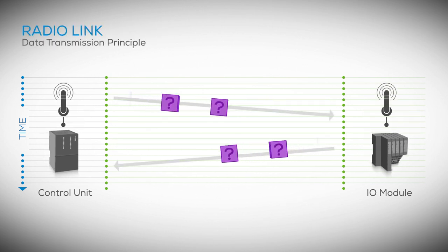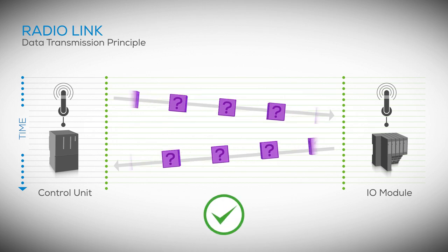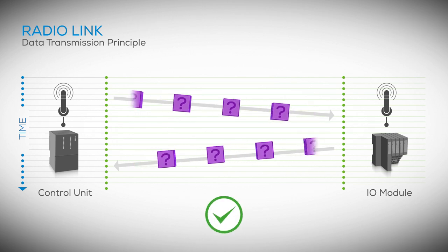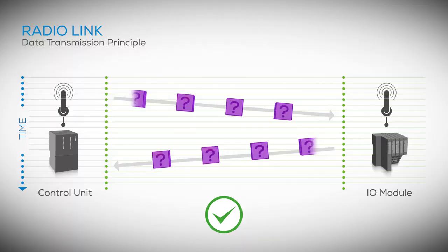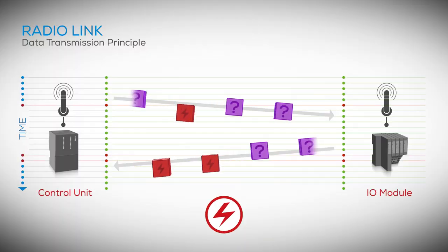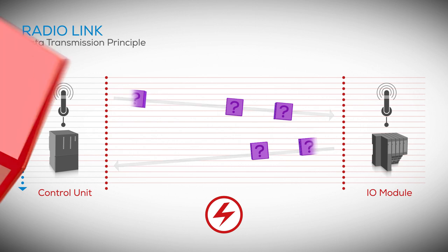With a radio connection, the data packets take longer to arrive, and if a short interruption occurs, the timeout will cause lost data packets. This simply means the controller or the I/O module does not receive several data packets and a bus error occurs. This usually leads to a plant shutdown.